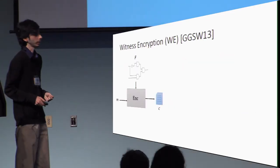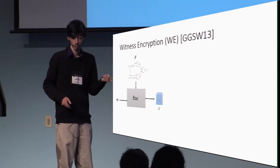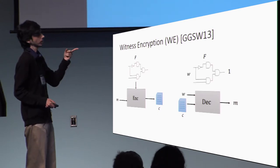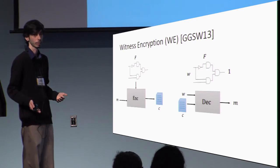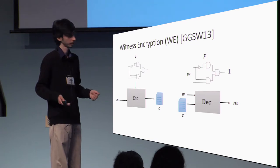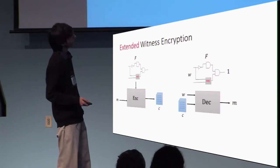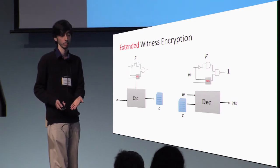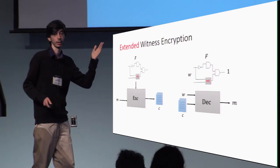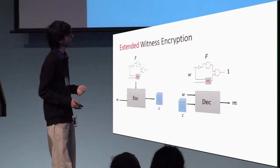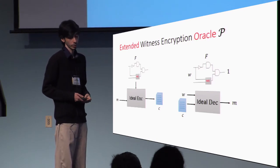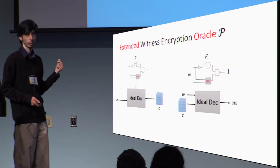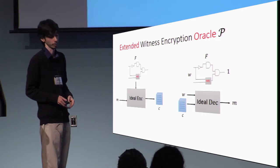What is witness encryption? Witness encryption says that you can encrypt a message with respect to some circuit F, and you only get back the message if the supplied witness is a satisfying input to the circuit. If it is not a satisfying witness, you get nothing. When we define extended witness encryption, we mean that the function supplied during encryption and evaluated during decryption can contain witness encryption gates — that is, encryption and decryption gates. We define such an oracle simply as an idealized encryption and decryption functionality where the encryption is, for example, a random oracle.